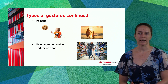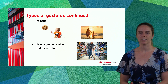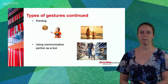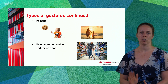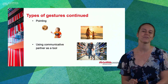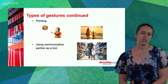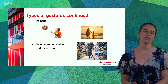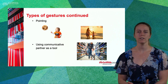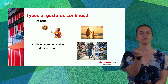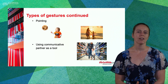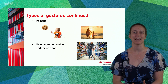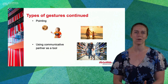A toddler might point to a cookie, for example, while saying 'oh' to indicate that they want that cookie. We also often use pointing to direct another person's attention to something that's caught our attention in the distance — for example, pointing to a cute dog and saying 'oh, look at that dog.' Another kind of gesture we often see in young children is their use of another person as a tool. Some children might grab your hand and actively drag you where they want you to go, or even place your hand on a bubble toy to indicate that they want you to produce more bubbles.